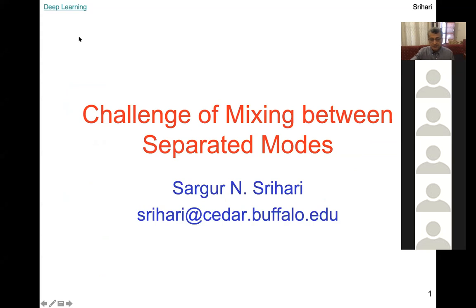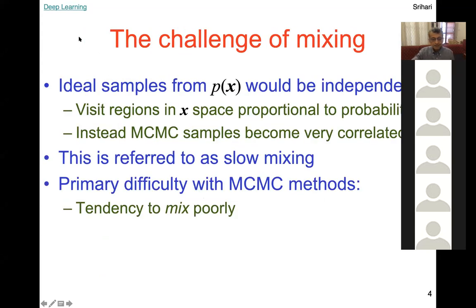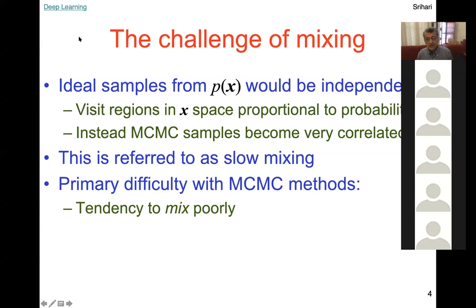The challenge of mixing: ideal samples would be independent. We want to visit regions in x-space proportional to the probability — go through all the state space and give samples proportional to probability, with high probability ones coming more often. Instead, MCMC samples become very correlated — referred to as slow mixing. This idea comes from mixture models: a mixture of Gaussians slowly moving from one mode to the other.